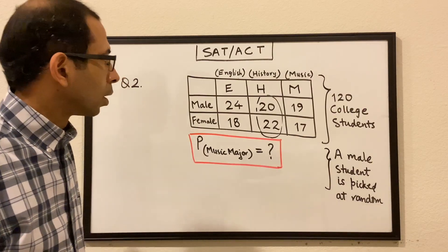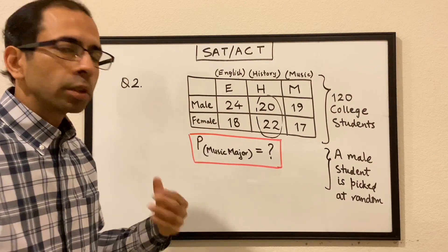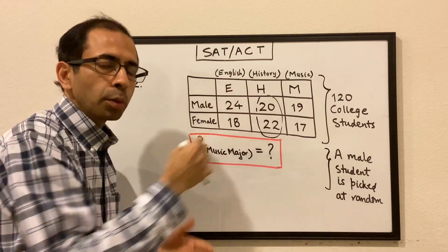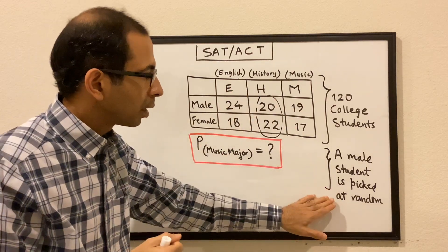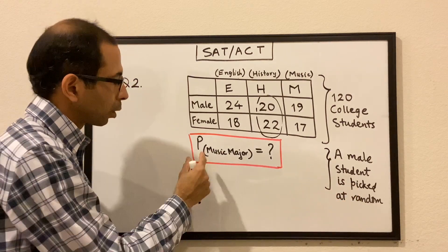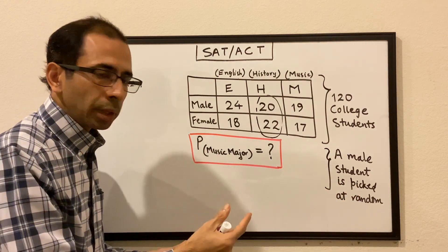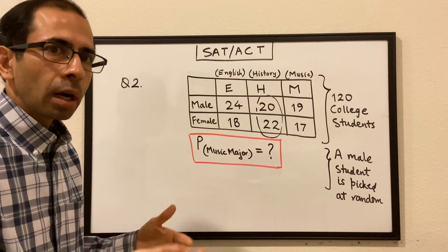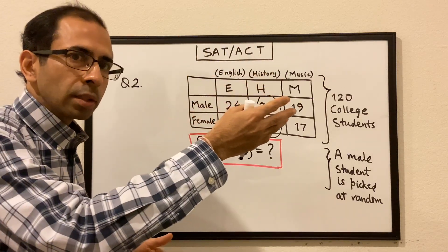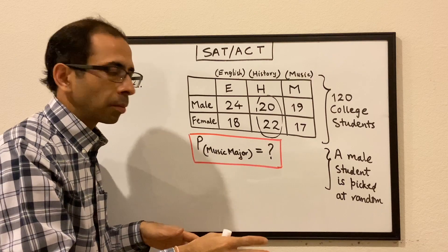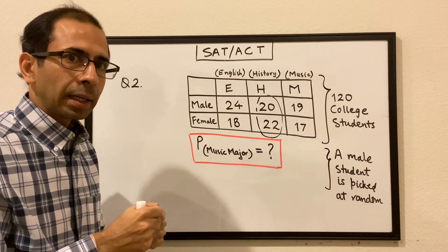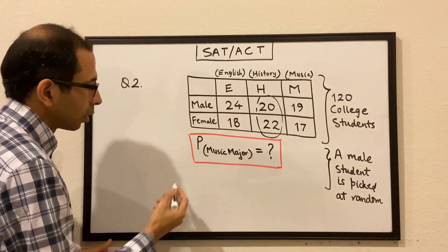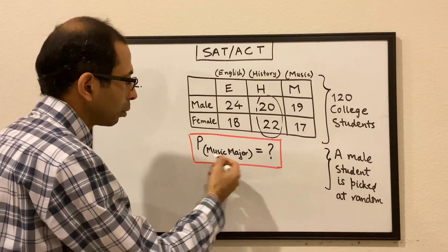Question number two. With the same set of information, the situation is changed — we are picking a male student at random. With that scenario, we have to find the probability that the male student would be doing a music major. In the previous question our boundary was the overall set of 120 students, but this time we know that we are picking a student from the male category. So our boundary is changed — our boundary is only male.